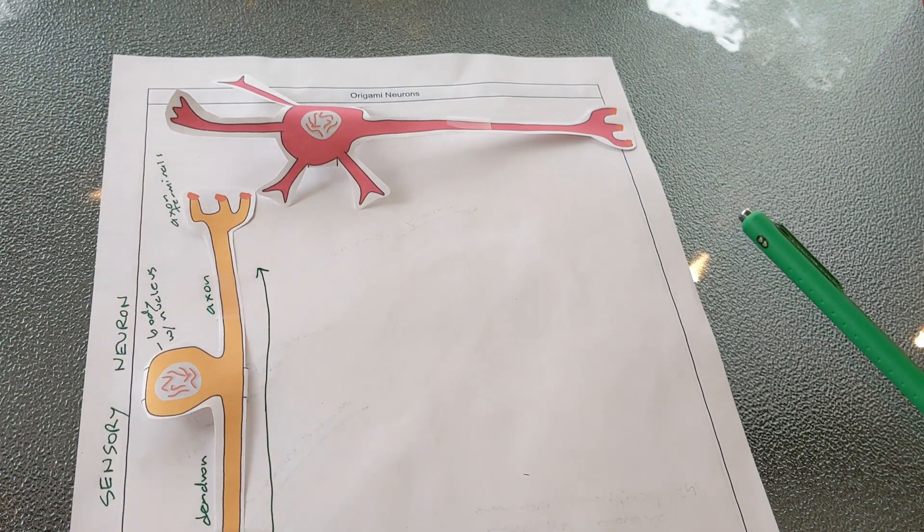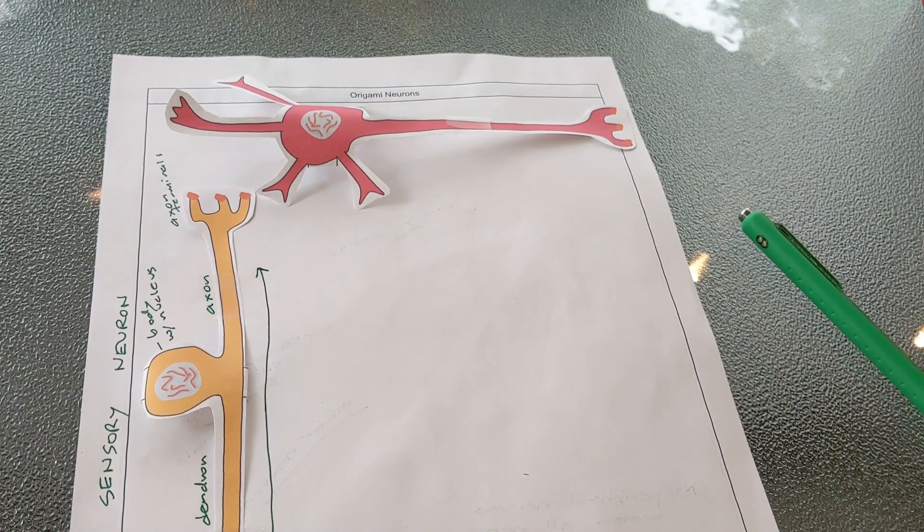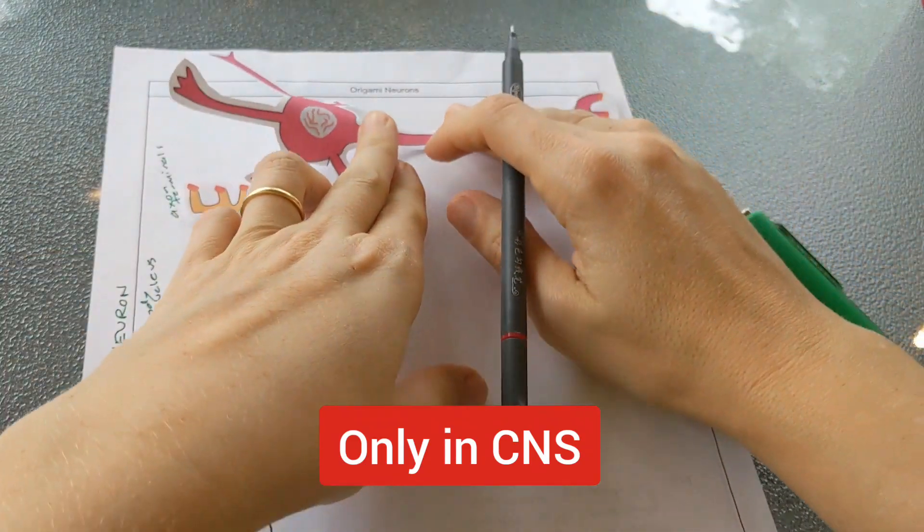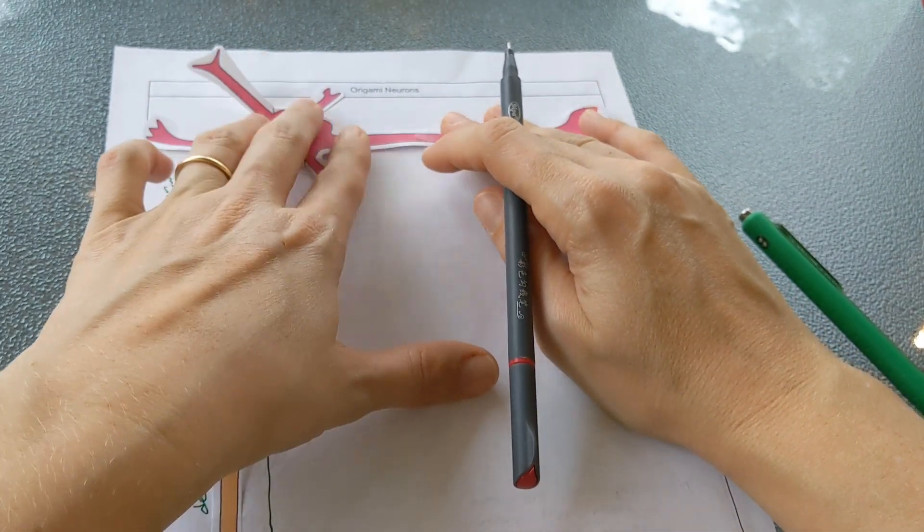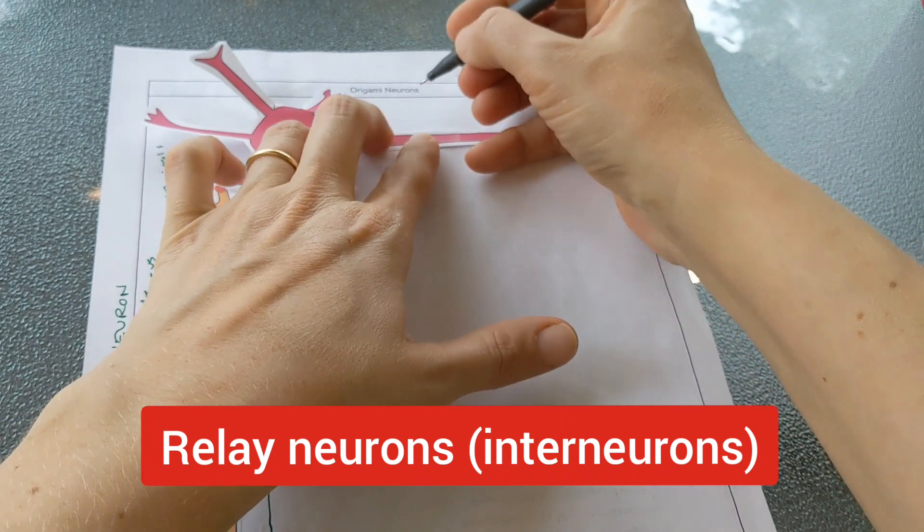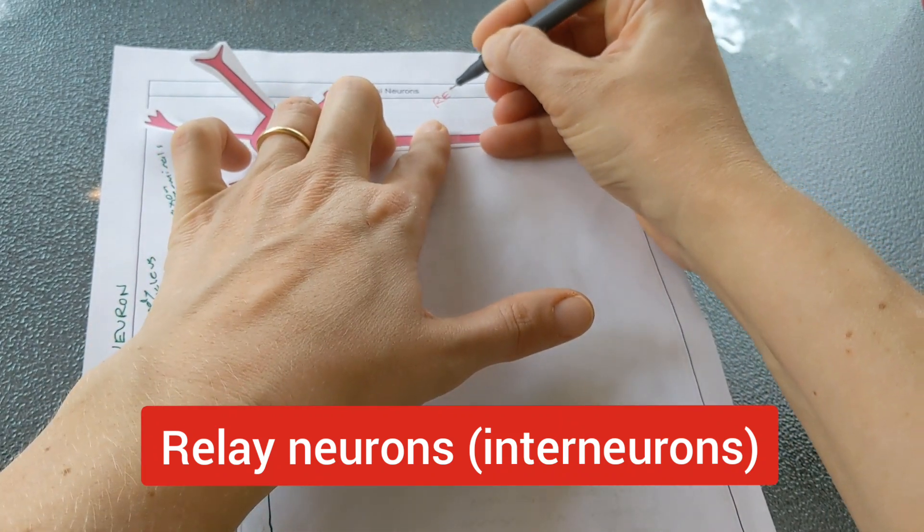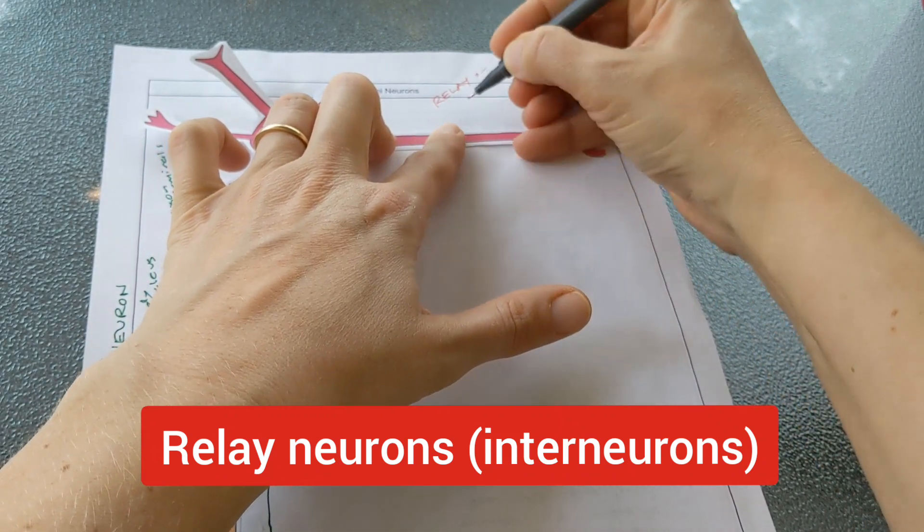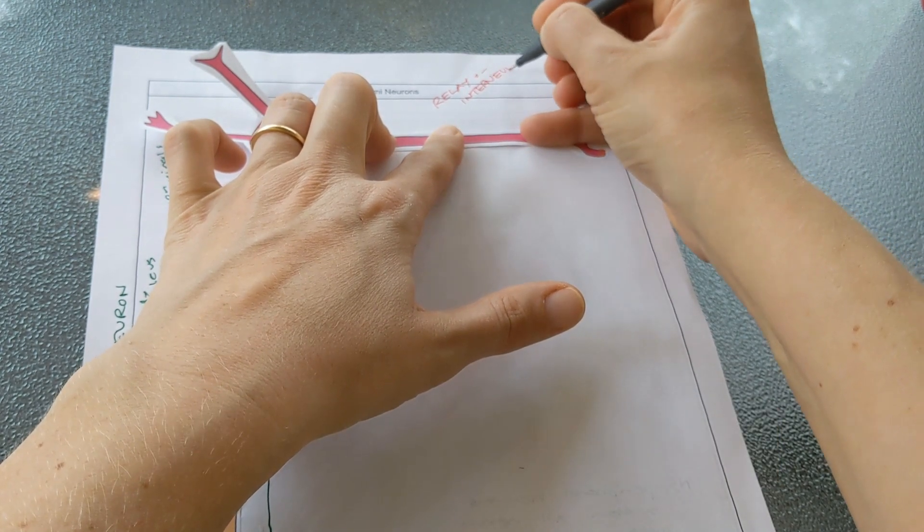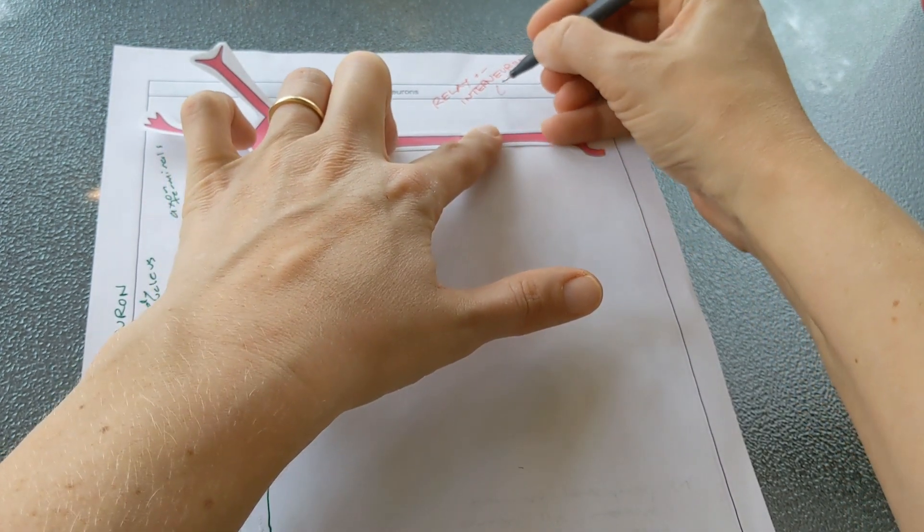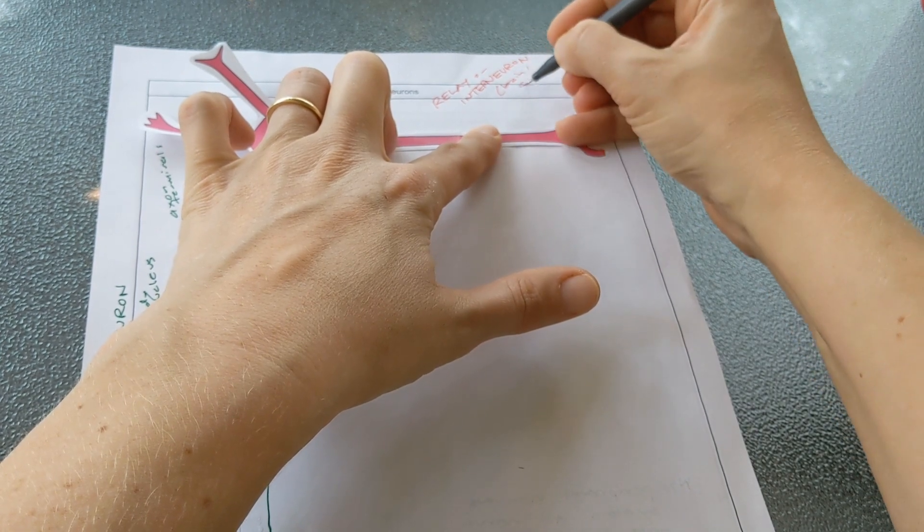The next kind of neuron that we're going to look at - these are the neurons that make up the brain and the spinal cord. So I'm using the color that I used for the central nervous system. So this is called a relay or interneuron, and I'll make a note: this is in the brain and spinal cord.